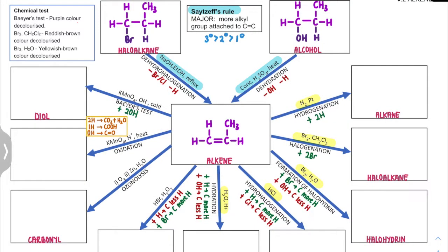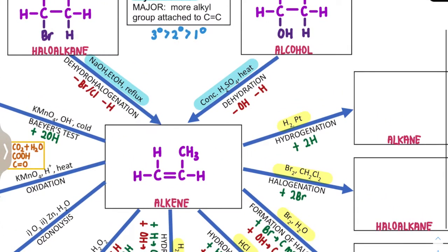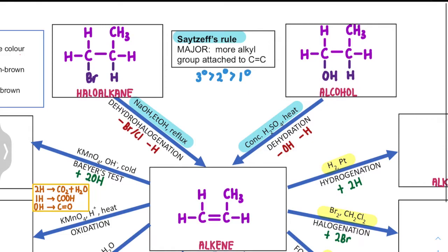When we talk about the reactions of Alkene, the first reaction is actually the preparation of Alkene, where the reaction is an elimination reaction. For the case of elimination reaction, it will follow Zaitsev's rule, where the major product is where more alkyl groups are attached to the carbon-carbon double bond.